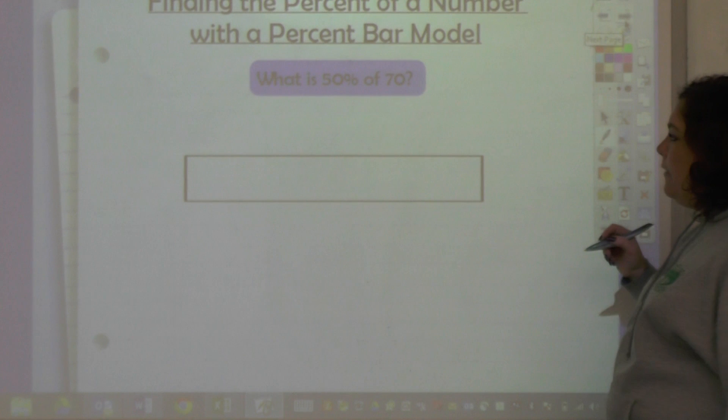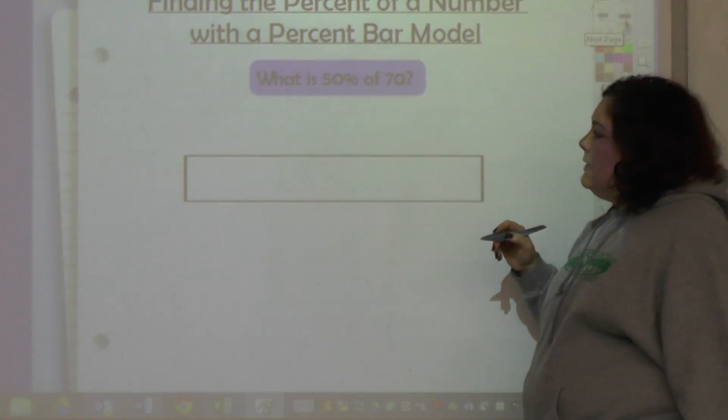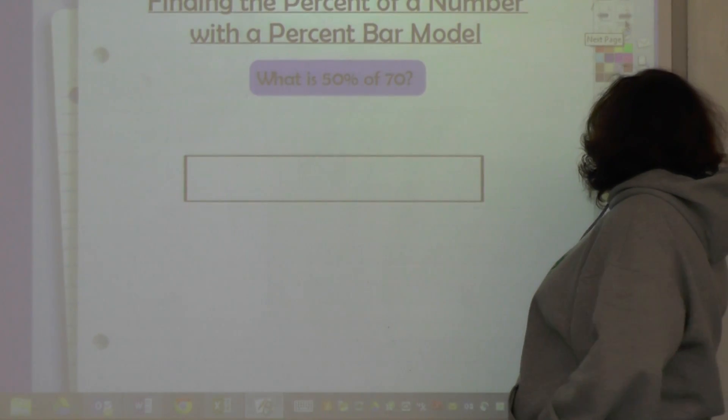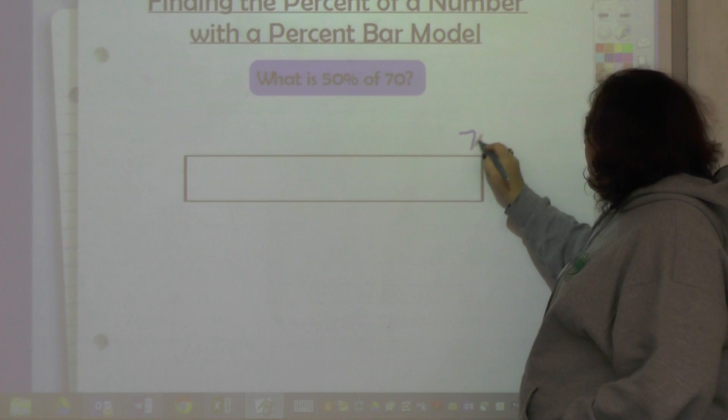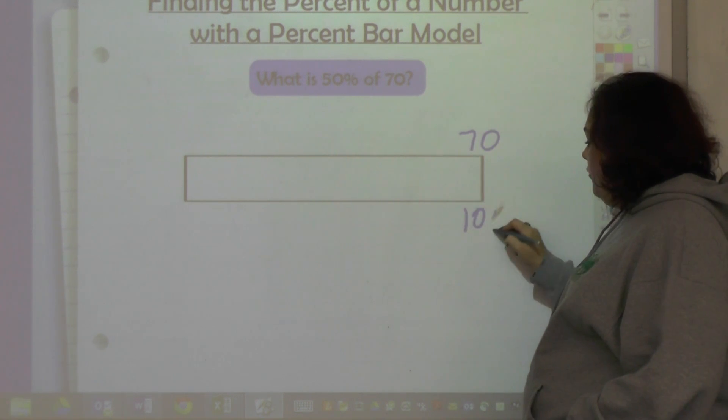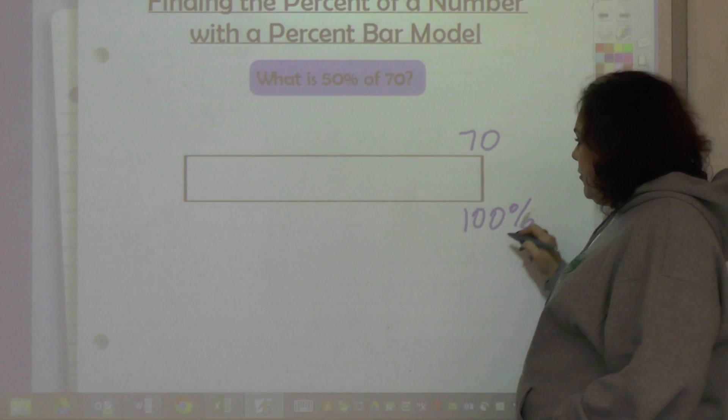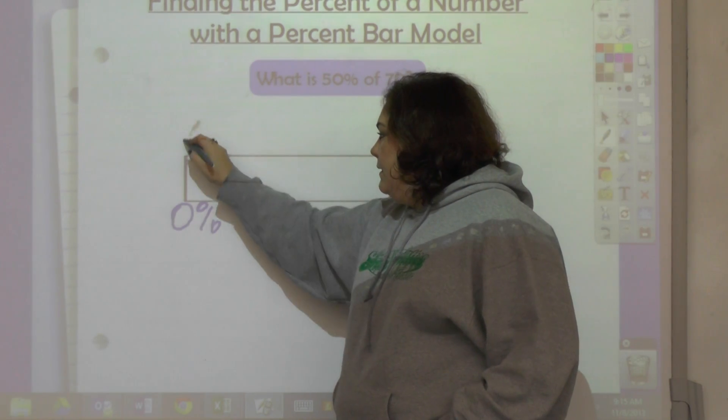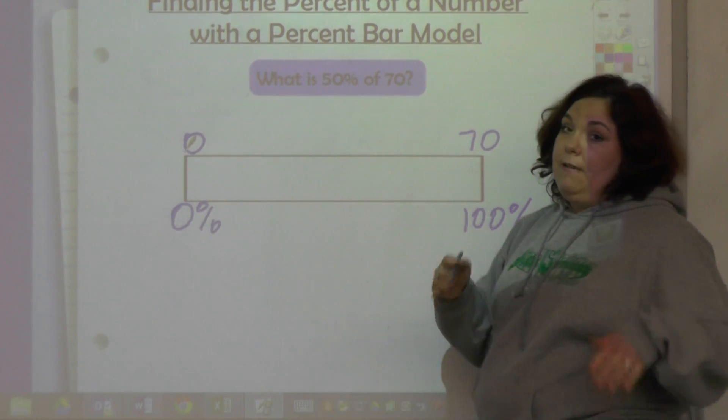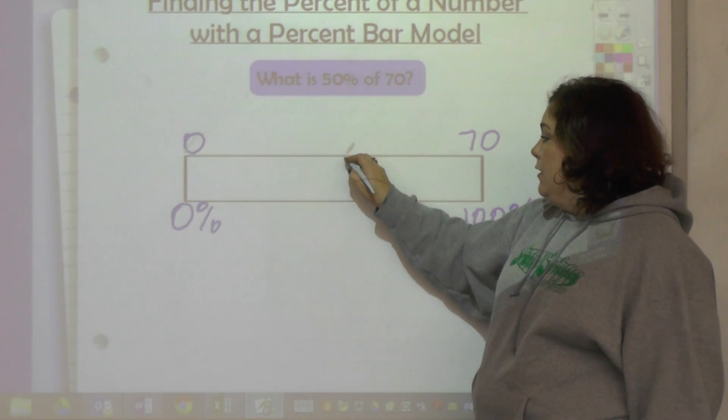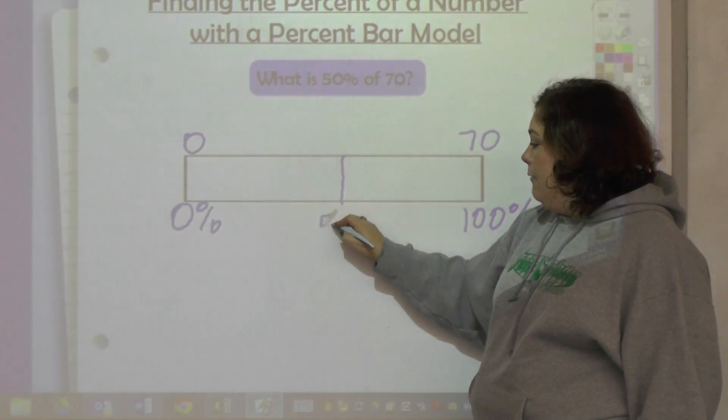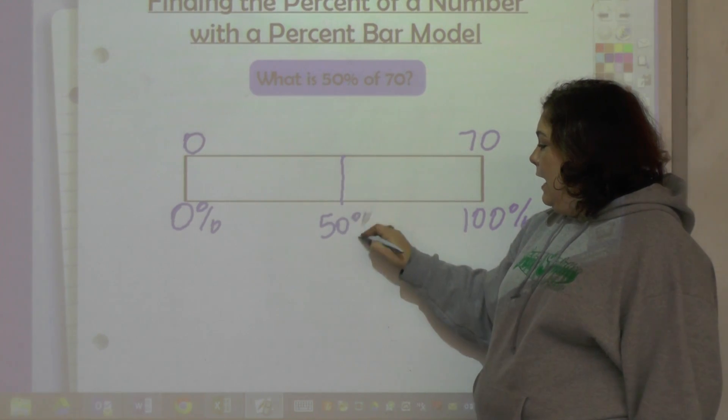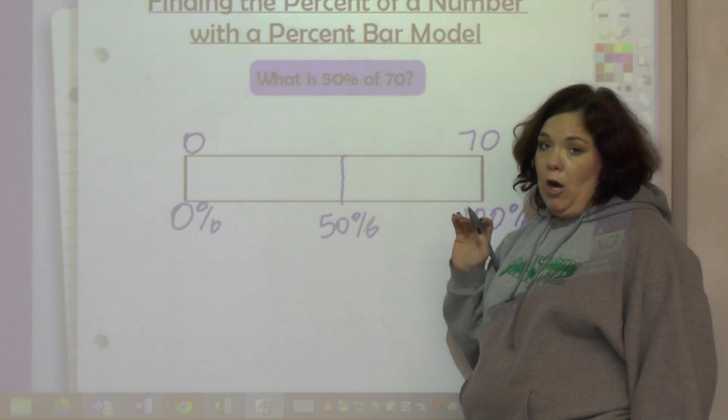Let's look at another one. So it says what is 50% of 70? Well, 70 is my whole amount, and that is 100%. 100% is 70, and this is zero percent and this is zero amount. Well, 50% is half, so I would mark this in half, and that would be 50%. This is divided into two parts.